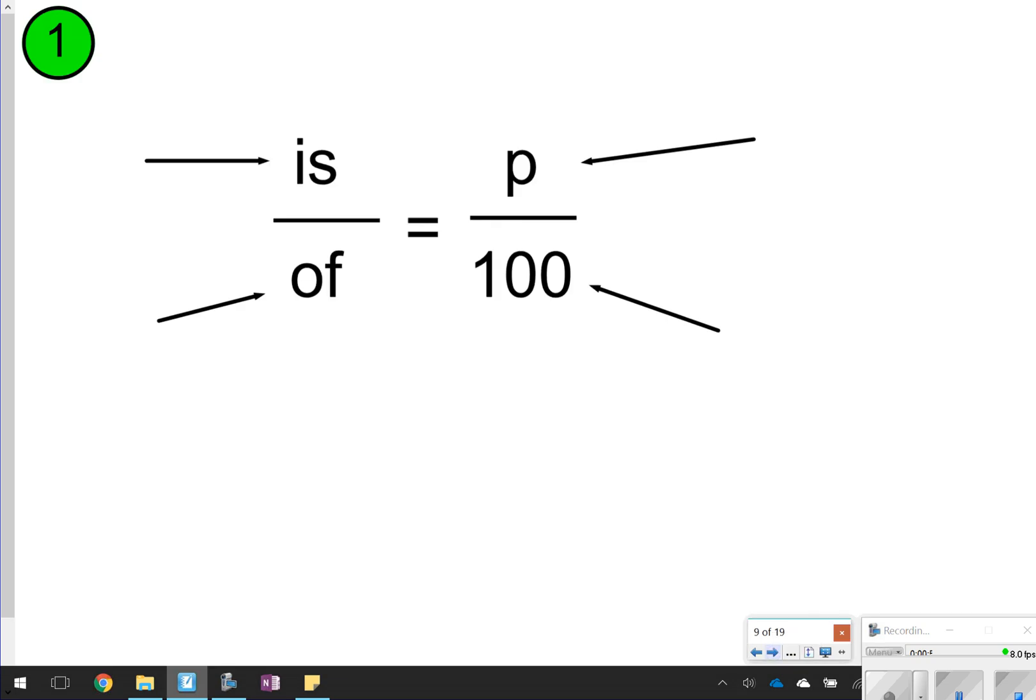An easier way to remember this is this proportion right here. So you are going to copy everything that's on this page. Instead of saying A, W, and P, we're going to say is, of, and P.